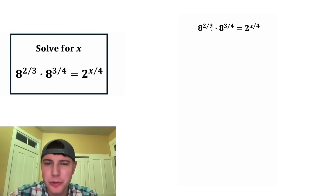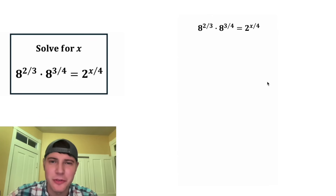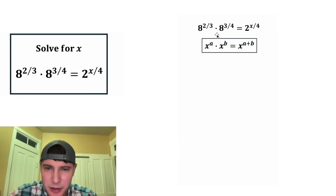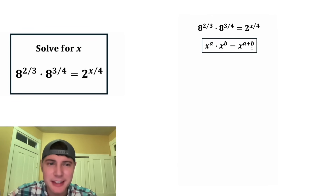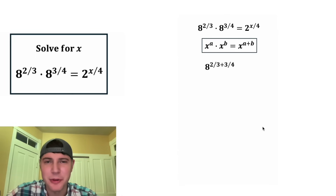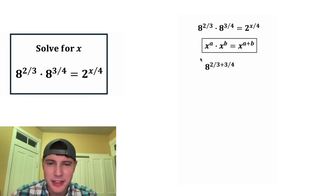It says eight to the power of two thirds times eight to the power of three fourths equals two to the power of X over four. First, let's combine these two on the left-hand side. Anytime you have two powers multiplying where the bases match, you can just add the exponents. So we can rewrite this where eight is the base and we're going to add these two exponents: two thirds plus three fourths. And this will still be equal to two to the X over four.